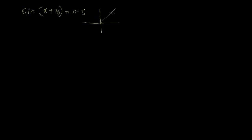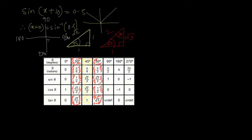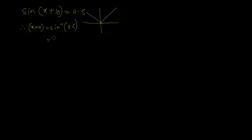Since sine is positive, it falls in the first quadrant (all positive) and the second quadrant (sine positive). The basic angle is found using sine inverse of 0.5. Since sine inverse of 0.5 is 30 degrees, the basic angle is 30 degrees. A common mistake is to break this down and find x by writing 30 minus 10, giving x = 20 degrees — but this cannot be done, because this angle is the basic angle and it cannot be broken down.